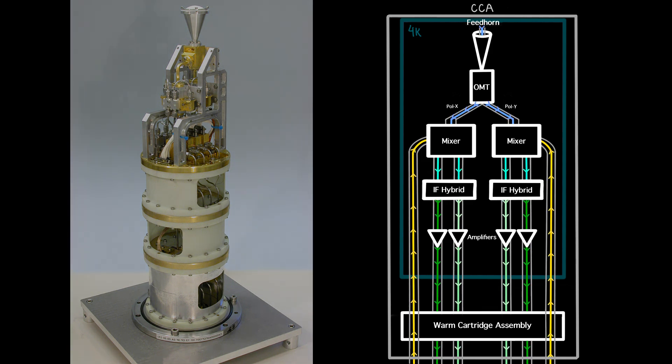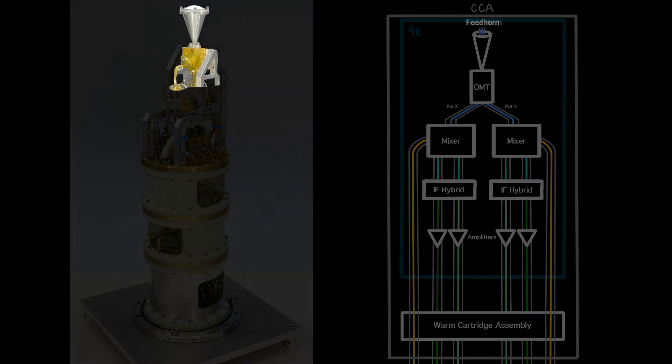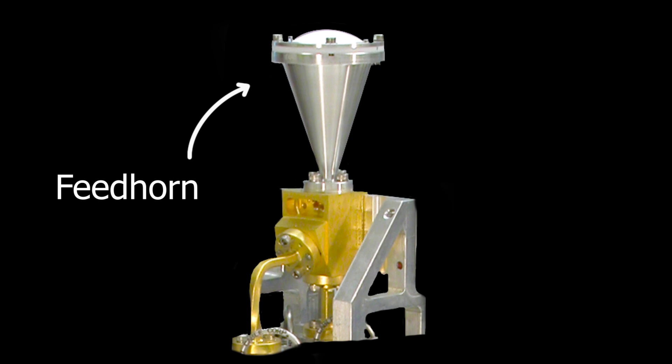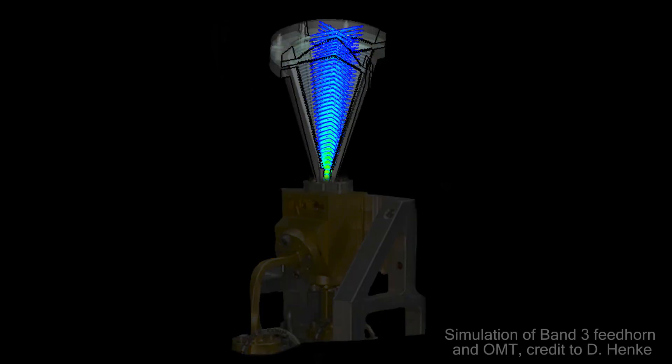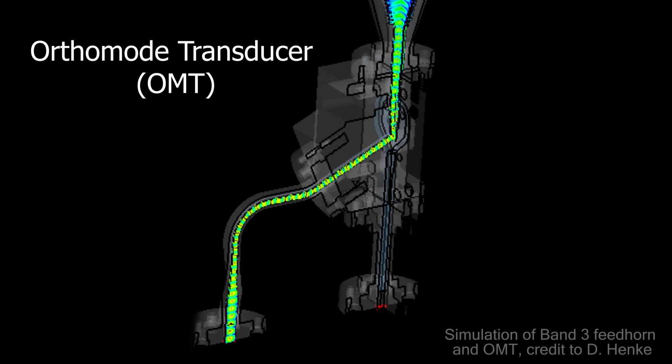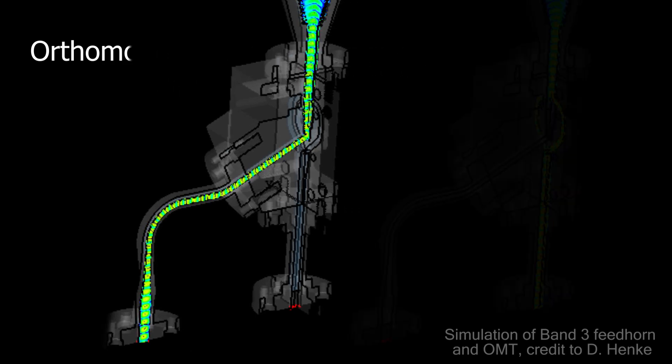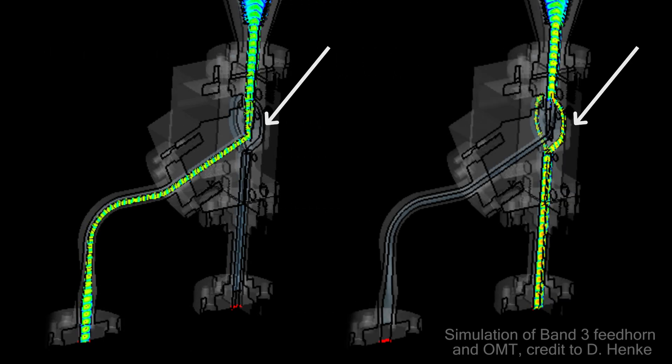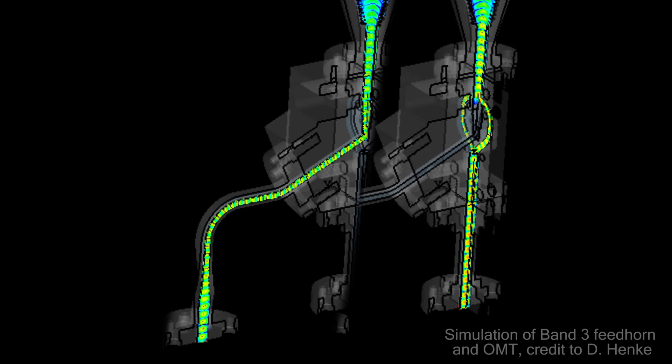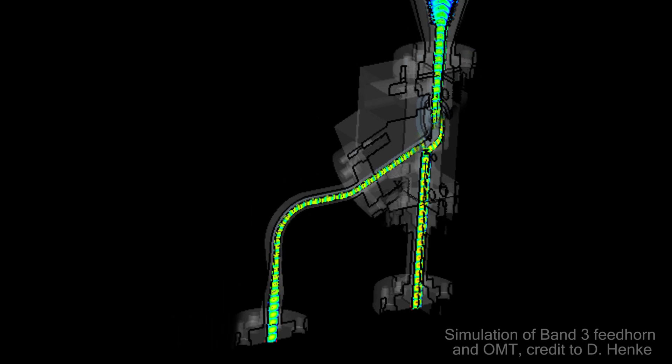Once through the cryostat window, the signal enters the feed horn - a small antenna which is shaped to capture the incoming frequencies of interest and funnel the output signal to the next stage of the receiver. From the feed horn, the signal passes through an orthomode transducer, or OMT, which uses specially designed waveguides to separate the two orthogonal polarizations, X and Y, into separate paths which can be processed separately.